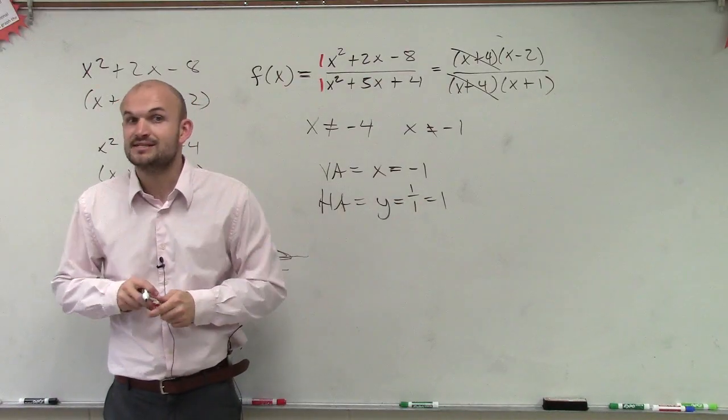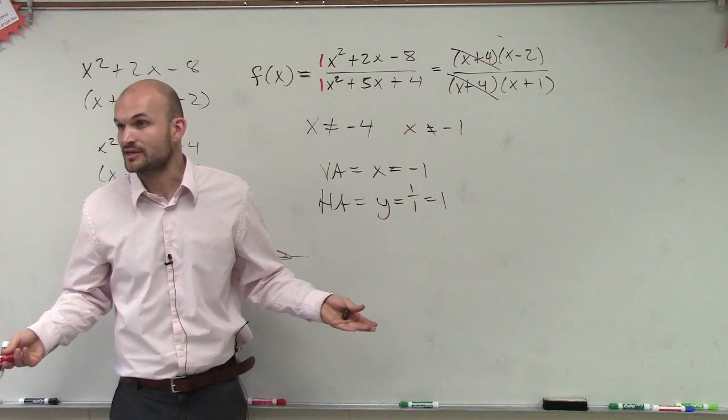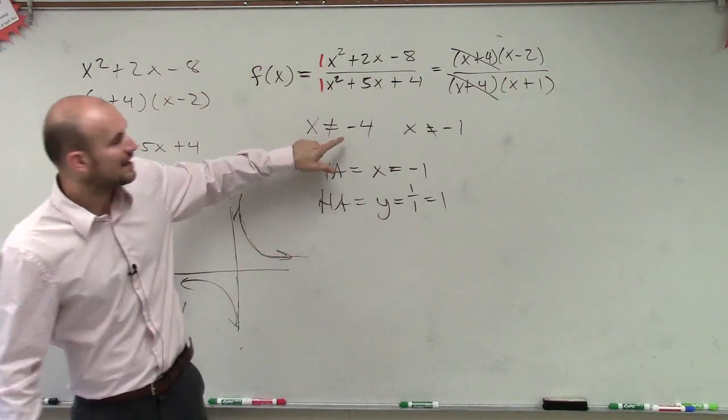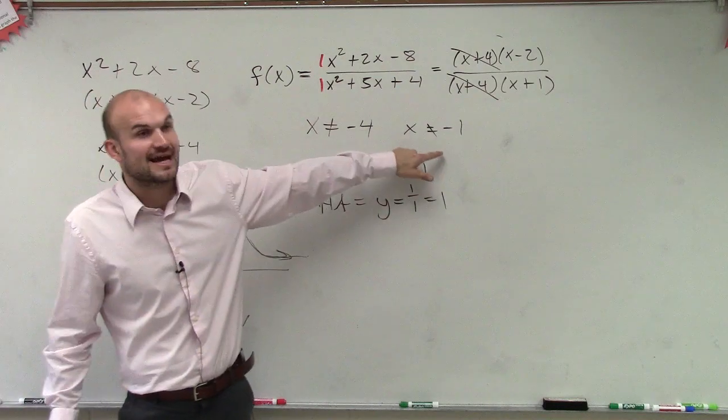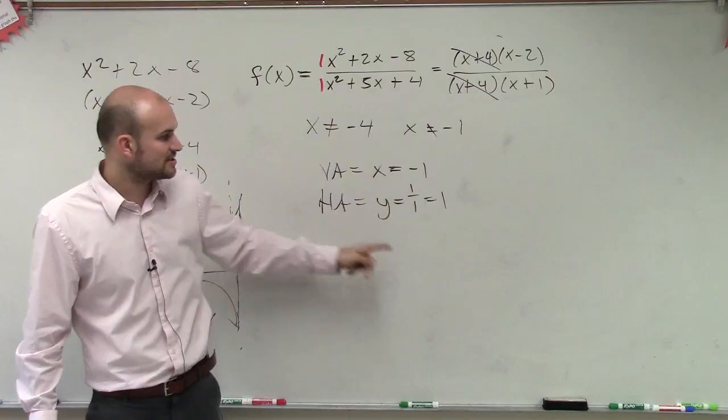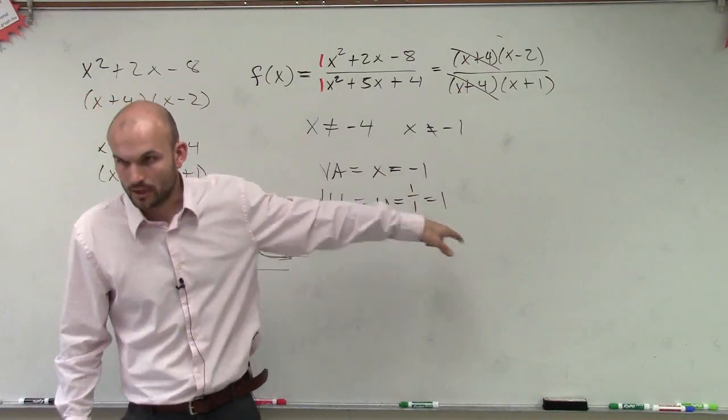Last thing, let's do domain and range. Domain is the set of all values except for your x value that can't be defined, right? So domain is going to be all real numbers except x cannot equal negative 4 and x cannot equal negative 1. Your range is going to be all real numbers except y cannot equal 1.